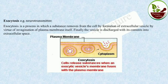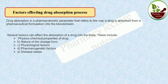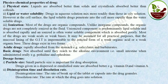Now let's look at the different factors which affect the rate of drug absorption. These include: physicochemical properties of the drug, nature of the dosage form, physiological factors, pharmacogenetic factors, and disease state. Regarding physicochemical properties — physical state matters: liquid is absorbed better than solid. A syrup is absorbed faster than a tablet.